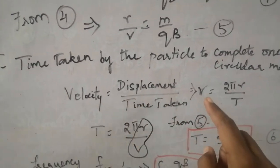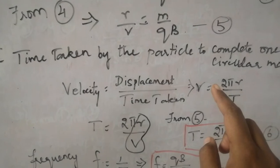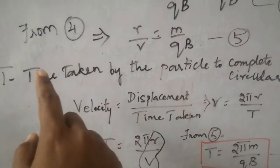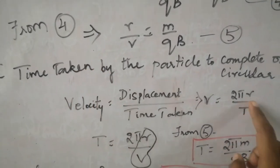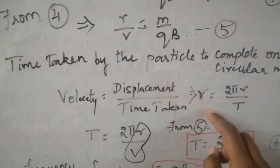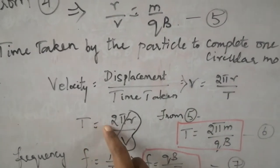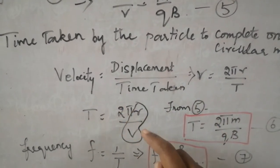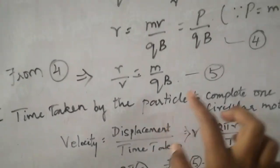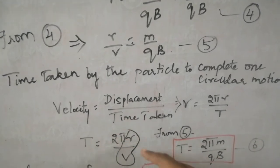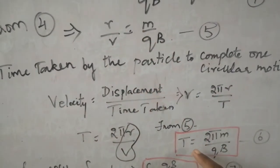So velocity is given by V and displacement is 2πR divided by time T. What we are going to calculate? Time taken. So we want only T. So bring T to the other side and this V to the opposite side. So it becomes T is equal to 2πR by V.